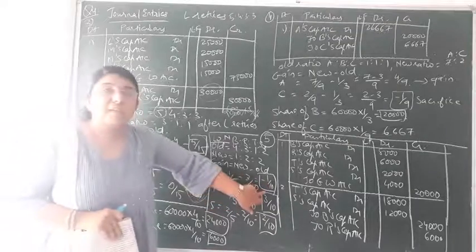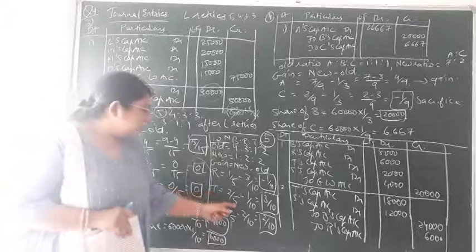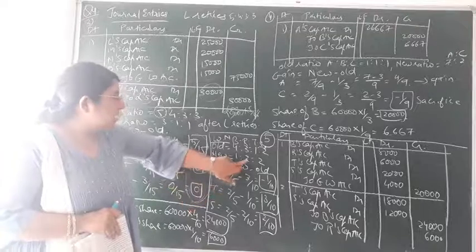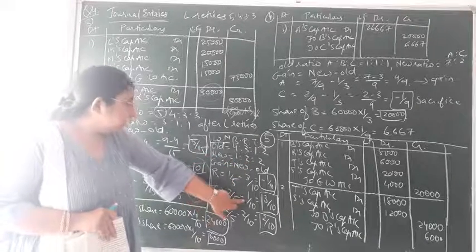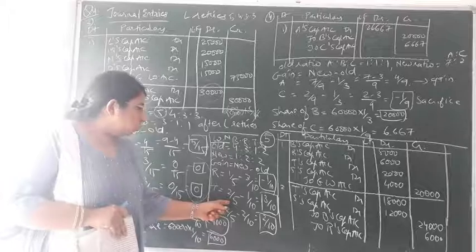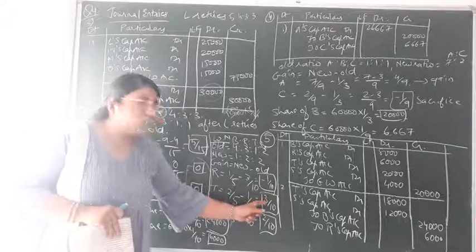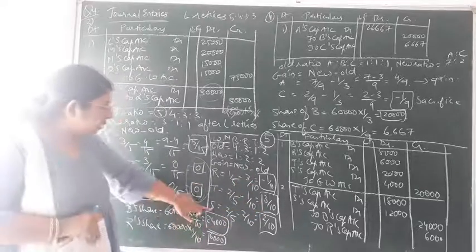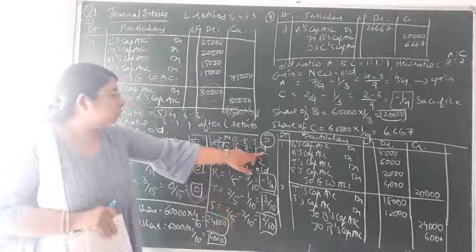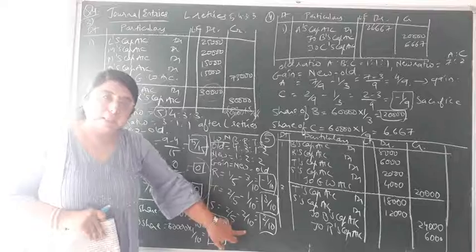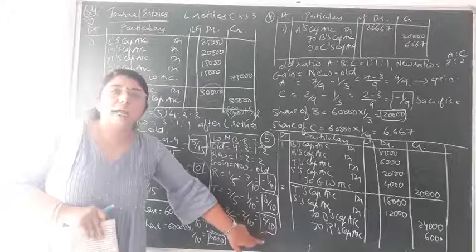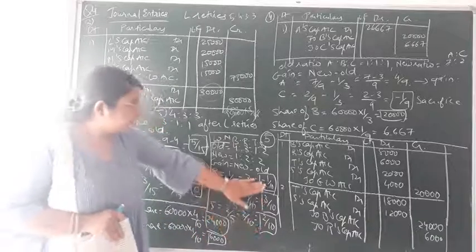For T: new share 2/5 minus old share 1/10. Taking LCM as 10: 4/10 minus 1/10 = 3/10. Positive — so T is gaining. For S: new share 2/5 minus old share 2/10. Taking LCM as 10: 4/10 minus 2/10 = 2/10. Positive — so S is gaining. So T and S are gaining while R is sacrificing.